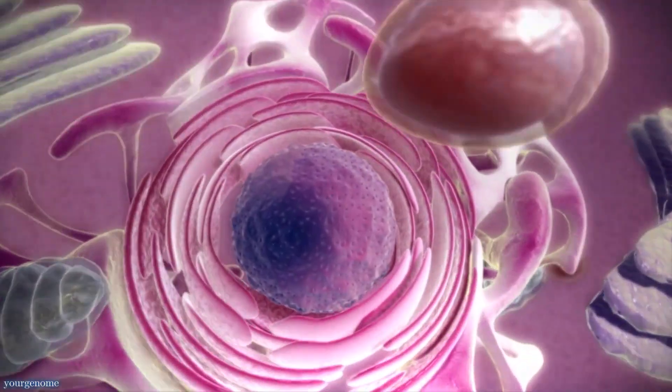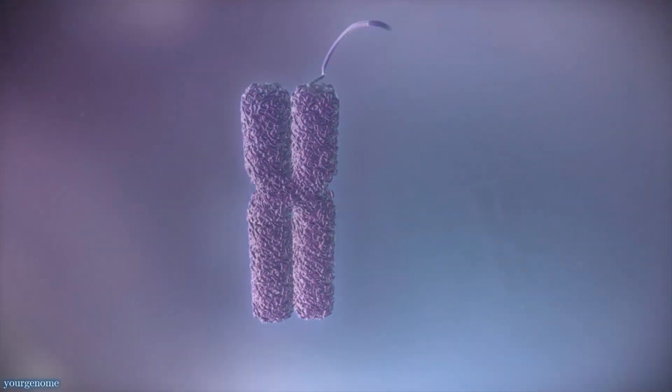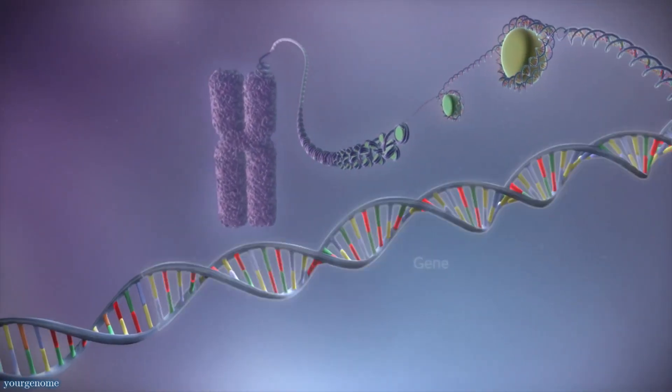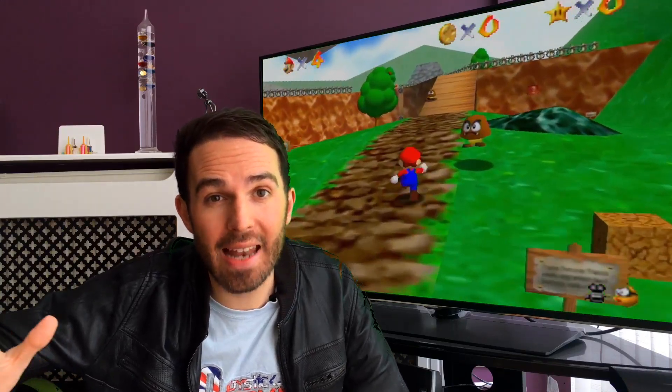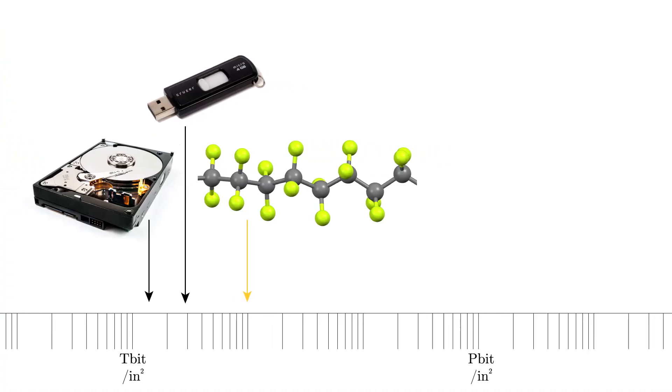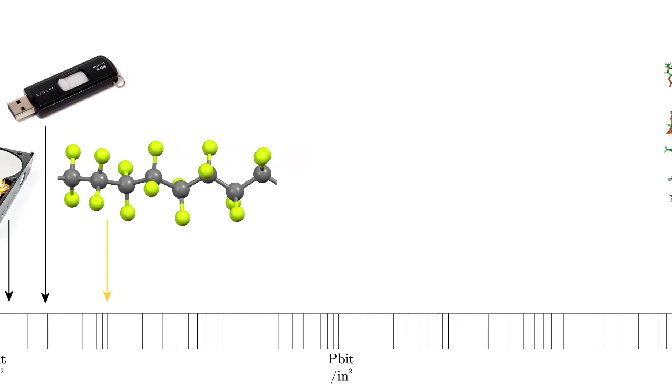But perhaps in the future we might be using something different. There's amazing research looking into different ways of packing information in as tightly as possible. For a while the record for Areal Densities that we've been able to achieve was using DNA — literally the same stuff that we are written in. Using a DNA synthesizer and DNA microchips we've been able to achieve 1.6 exabits per square inch. That's over a million times better than our best hard drives.